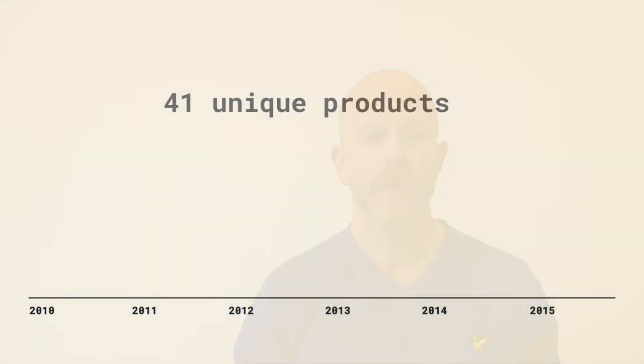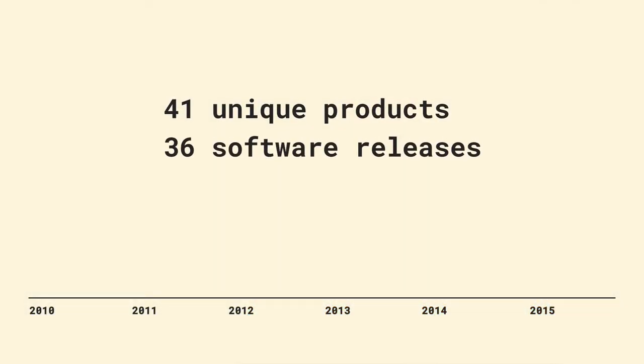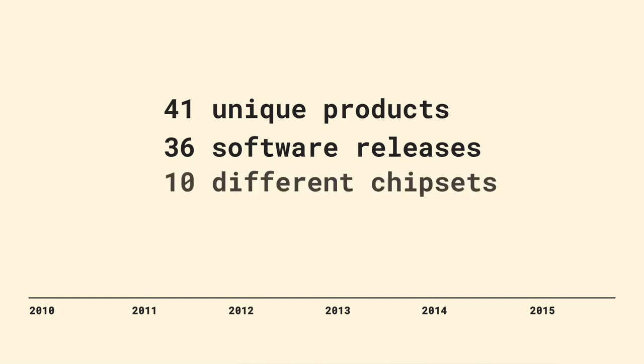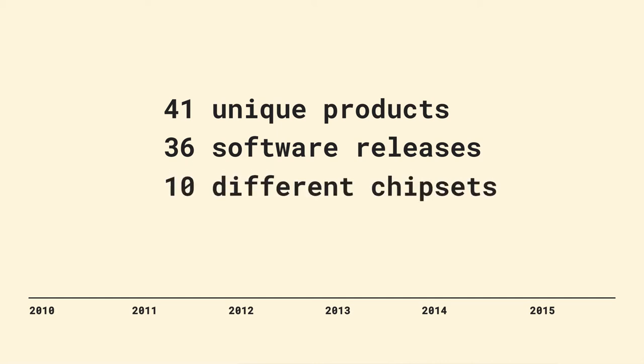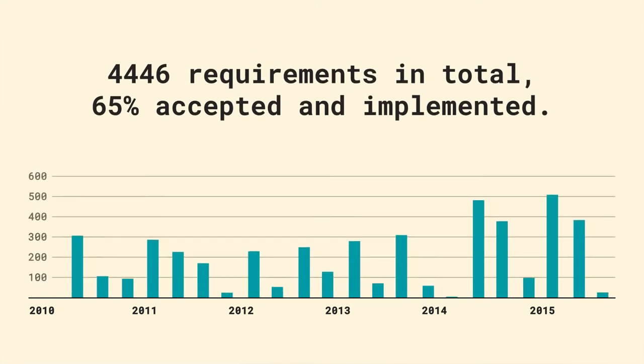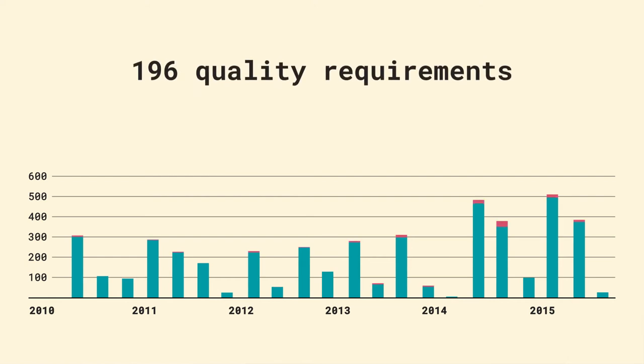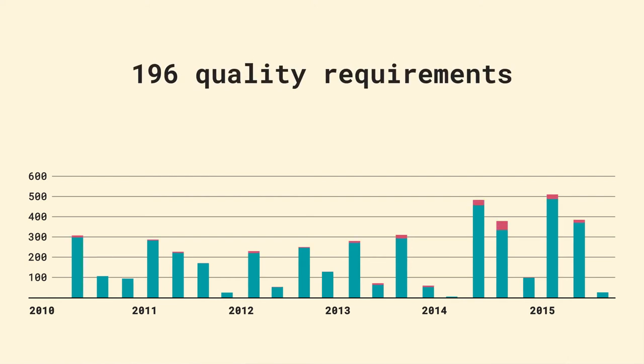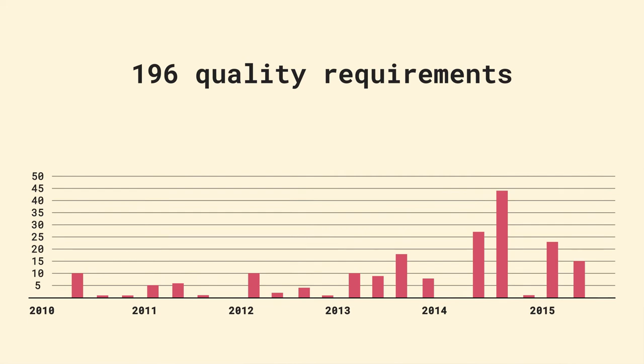We studied all the decisions taken for all requirements over a period of five years. In this period the company released 41 products, 36 different software releases and 10 different chipsets. During this period there were decisions taken for 4,446 requirements, of which 196 were explicit quality requirements, for example startup time or usability.